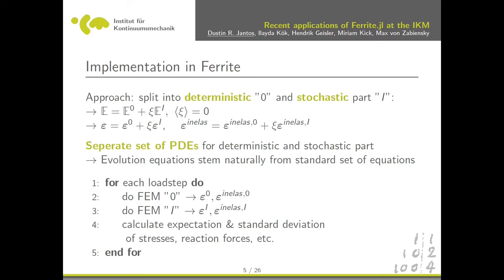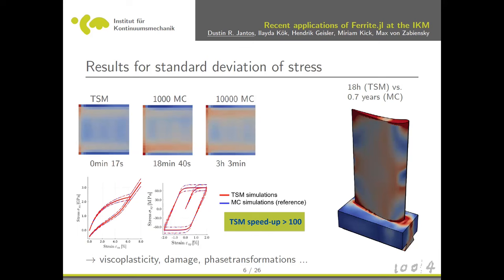Here are some examples with computation times. On the left you have our TSM — Time Separated Mechanics — approach. What we see is the standard deviation of stress distribution of a plate under load. Our method takes about 17 seconds, while Monte Carlo takes 18 minutes to three hours, depending on how strictly you apply the convergence criterion.